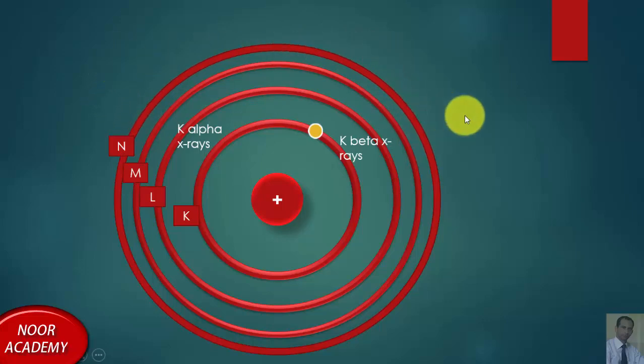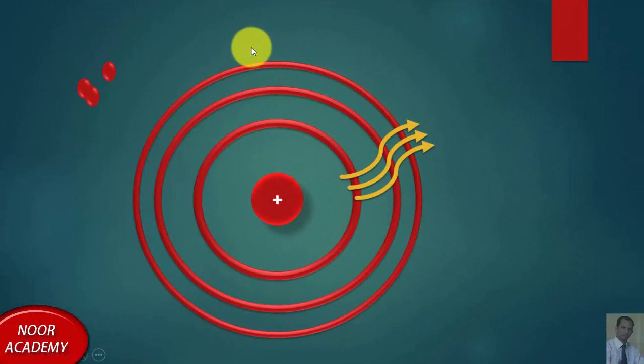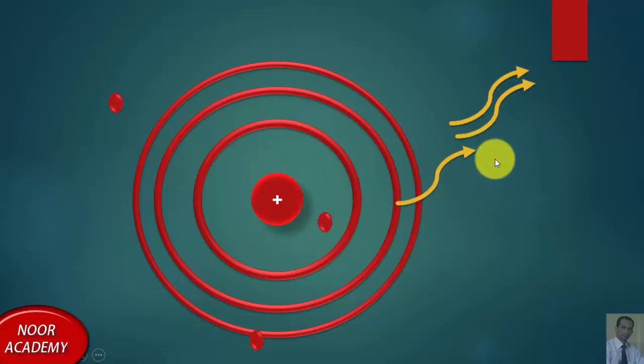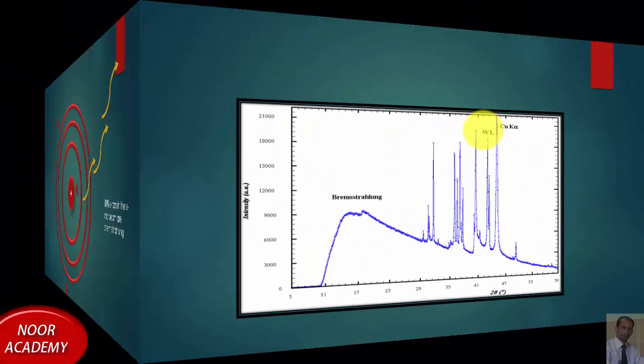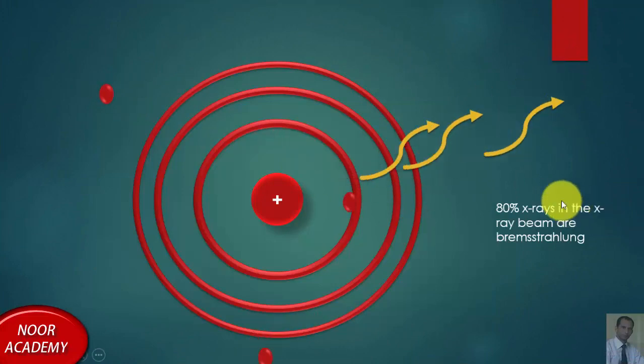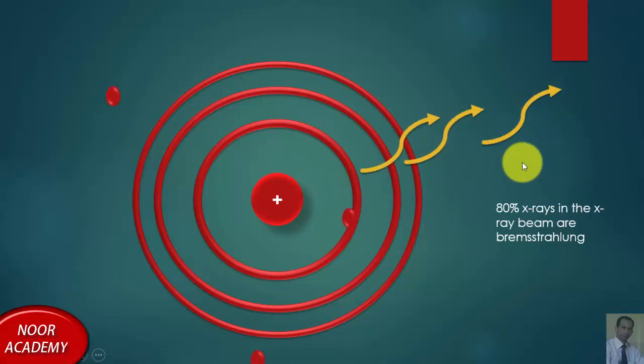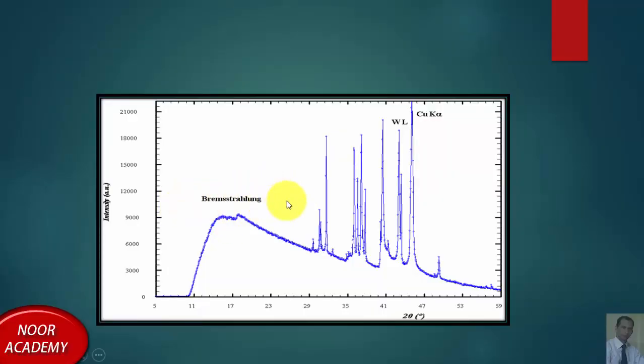There is another method which is called bremsstrahlung method or bremsstrahlung radiations. In this case, when an electron coming from the cathode moves near the nucleus and gets decelerated, the kinetic energy of this electron is converted into X-rays. Decelerated electrons also produce X-rays which are called bremsstrahlung radiations. 80% of the X-rays produced are bremsstrahlung radiations, produced by the deceleration of electrons which become decelerated when they pass close by the nucleus.